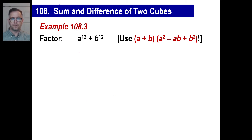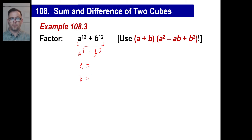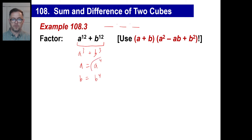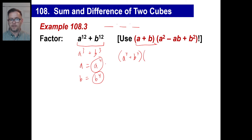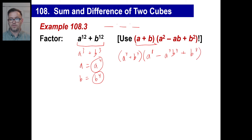Let's try one more. You have to visualize this as a cubed plus b cubed. What cubed gives you a to the 12th? What times itself three times gives a to the 12th? The answer is a to the 4th. And b will be b to the 4th. So a is a⁴ and b is b⁴. We have (a + b) = (a⁴ + b⁴). A squared is a⁴ times a⁴, giving a to the 8th. Minus a times b is a⁴ times b⁴. Plus b squared is b⁴ times b⁴, giving b to the 8th.